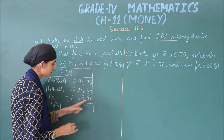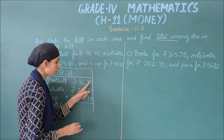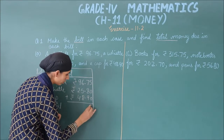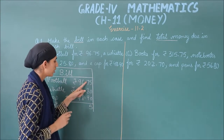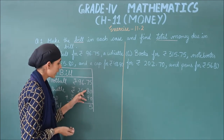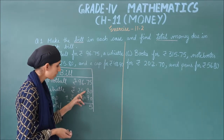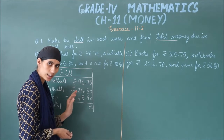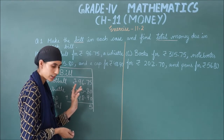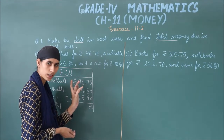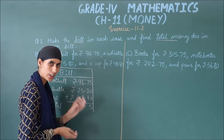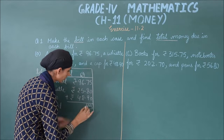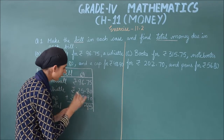Now we add them up. 5 plus 0 is 5, plus 0 is 5. Next: 7 plus 8 is 15, 15 plus 9 — counting: 16, 17, 18, 19, 20, 21, 22, 23, 24. Count carefully. So write 4, carry 2. Then place the decimal.